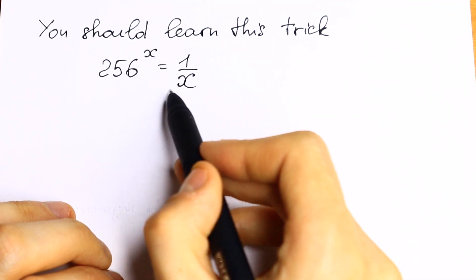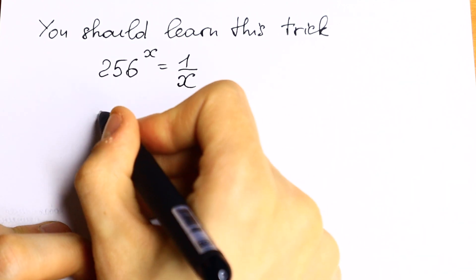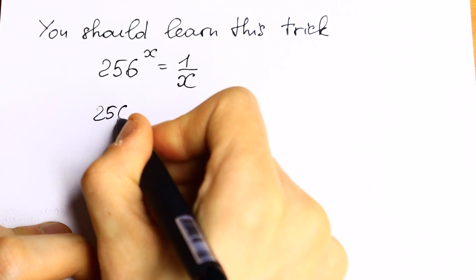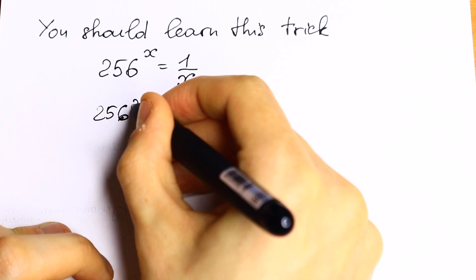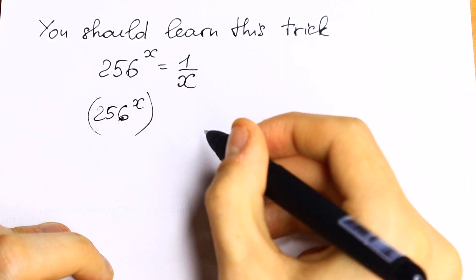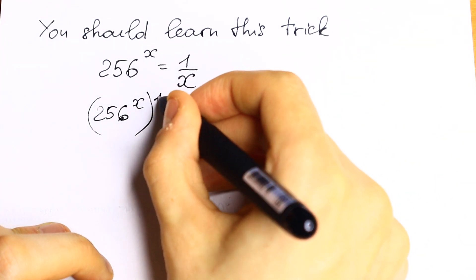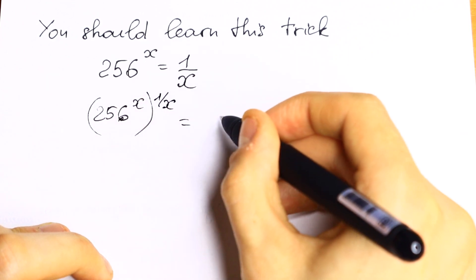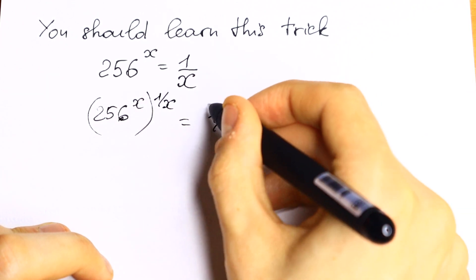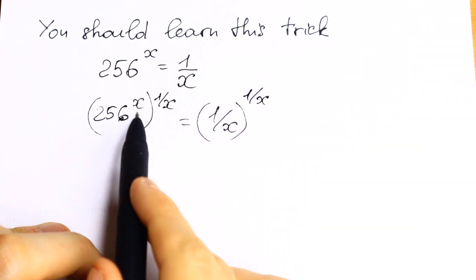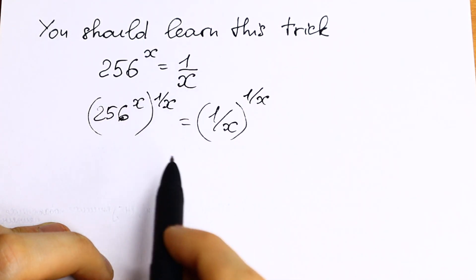Take a look, if we raise both sides to the power 1 over x, what we will have? We will have 256 to the power x on the left raised to the power 1 over x. And we do the same on the right, we will have 1 over x raised to the power 1 over x.